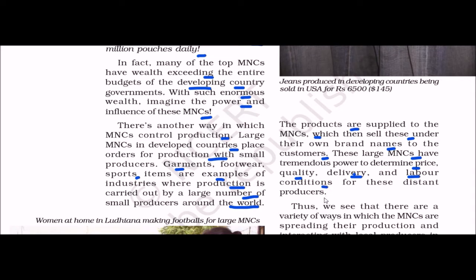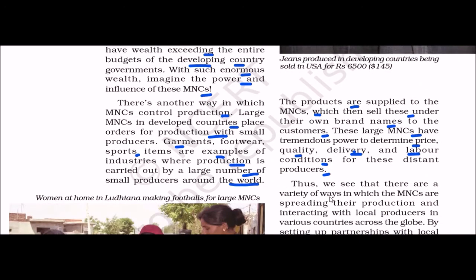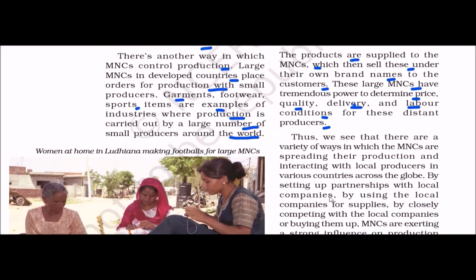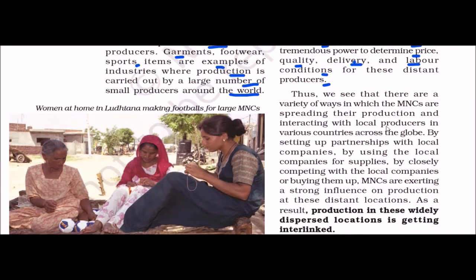Thus, there are a variety of ways in which MNCs spread their production and interact with local producers — by setting up partnerships, using local companies for supplies, competing with local companies, or buying them up. MNCs exert strong influence on production at these distant locations. As a result, production is widely dispersed and getting interlinked. For example, a woman at home in Ludhiana makes footballs for large MNCs.